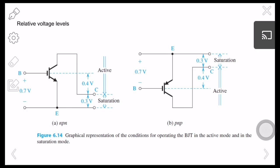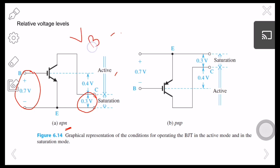Important voltage levels for solving problems: to turn on an NPN BJT and have current flow, the base-to-emitter voltage VBE must be 0.7 V. If the collector-to-emitter voltage VCE is within 0.3 V, the BJT is in the saturation region; if VCE is beyond 0.3 V, it is in the active region. For PNP, the emitter-to-base junction should have a 0.7 V drop — the opposite applies.